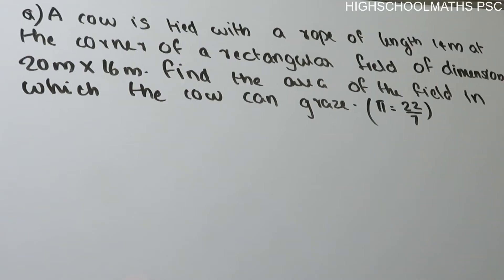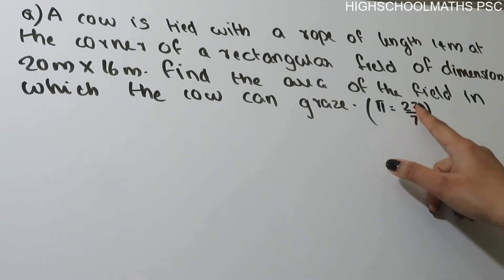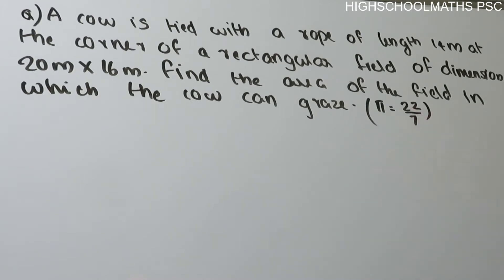In this video, we are going to do three questions. Now, first question: A cow is tied with a rope of length 14 meters at the corner of a rectangular field of dimensions 20 meters by 16 meters. Find the area of the field in which the cow can graze. Take pi equal to 22 by 7.